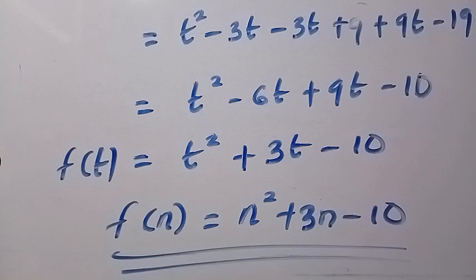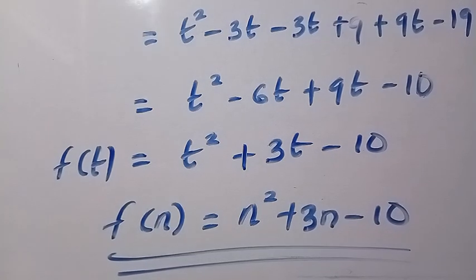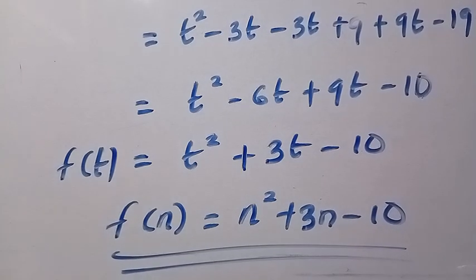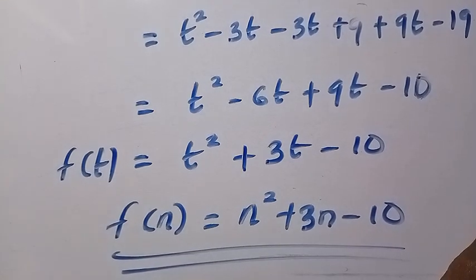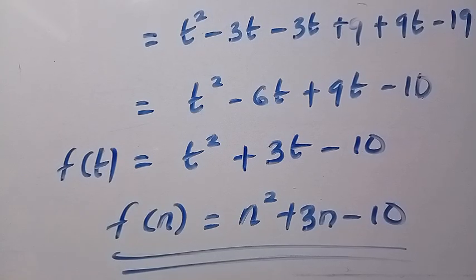Since f of t equals t squared plus 3t minus 10, by changing t back to n we have f of n equals n squared plus 3n minus 10. This is the same result as the first method — using the manipulation method and the substitution method we get the same answer. Thanks for watching, and don't forget to subscribe to this channel, turn on the notification bell, and see you in the next class. Never stop learning, bye bye.